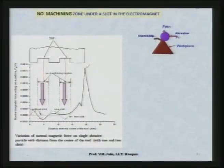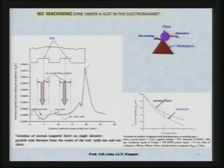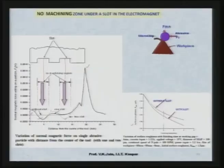Increasing to three or four slots gives no substantial advantage. Generally only one slot is used to enhance performance of magnetic abrasive finishing. The highest forces occur at the edges of the electromagnet and contribute greatly to finishing. A figure confirms that surface roughness Ra value obtained in a certain period of time is higher without a slot and lower with a slot — finishing rate is higher when the magnet has a slot compared to when it has no slot.